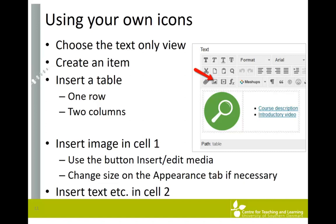If you want to use your own icons, do the following: choose the Text Only view and create an item — folders and learning modules can also be used. Type in a heading for your item. In the text box, insert a table with one row and two columns — this helps you control the position of the icon and text. Insert your icon image in cell 1 using the 'Insert/Edit Media' button. You can change the size of the image on the Appearance tab. Insert your text in cell 2, click Submit, and you have created an item with your own icon.